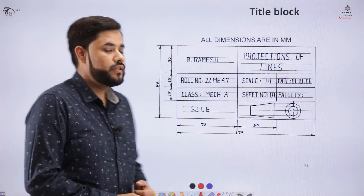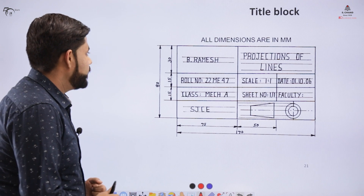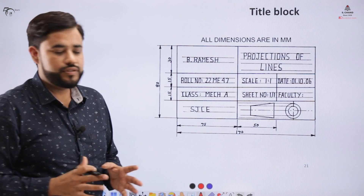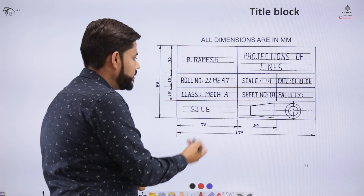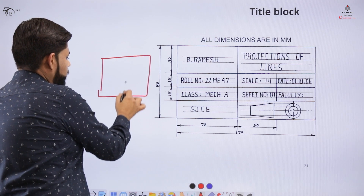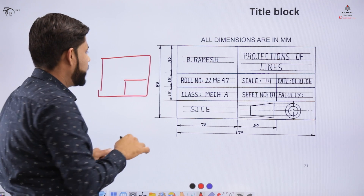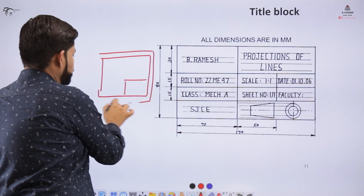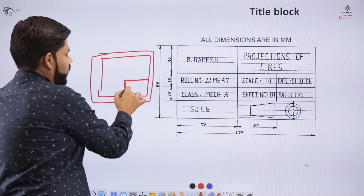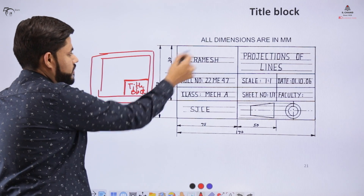In the previous video we learned about the title block. We saw that this type of setup is required on your sheet, and we make this setup in the bottom right corner of your sheet. Apart from the title block, we also make a border on the sheet, and on the bottom right corner we place the title block.